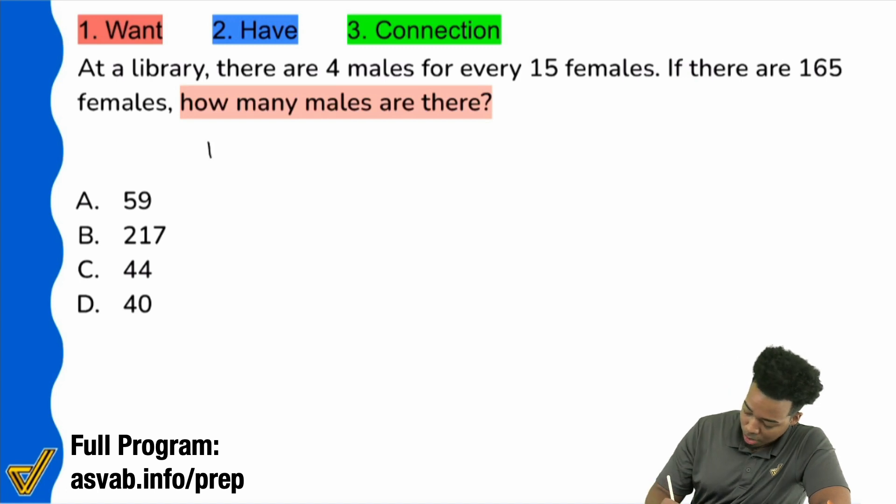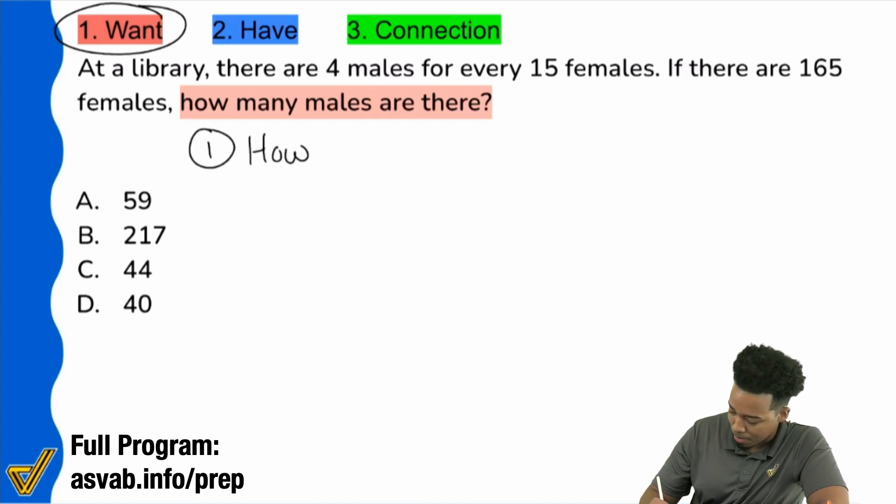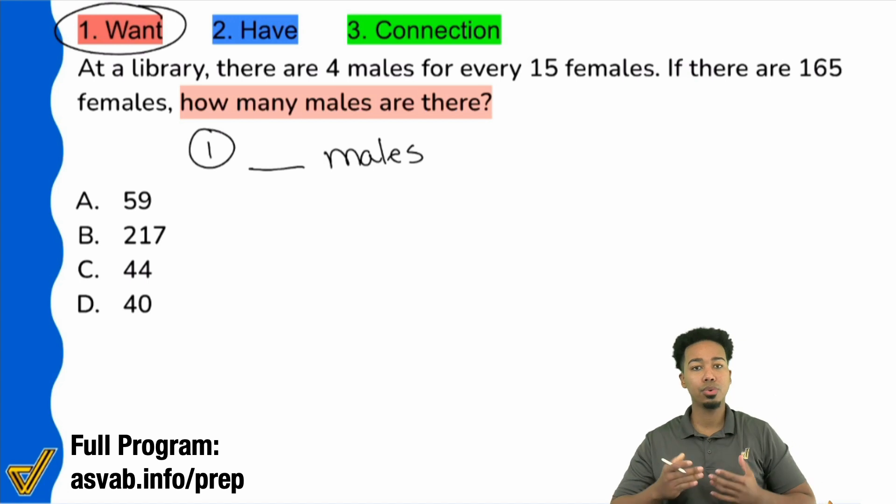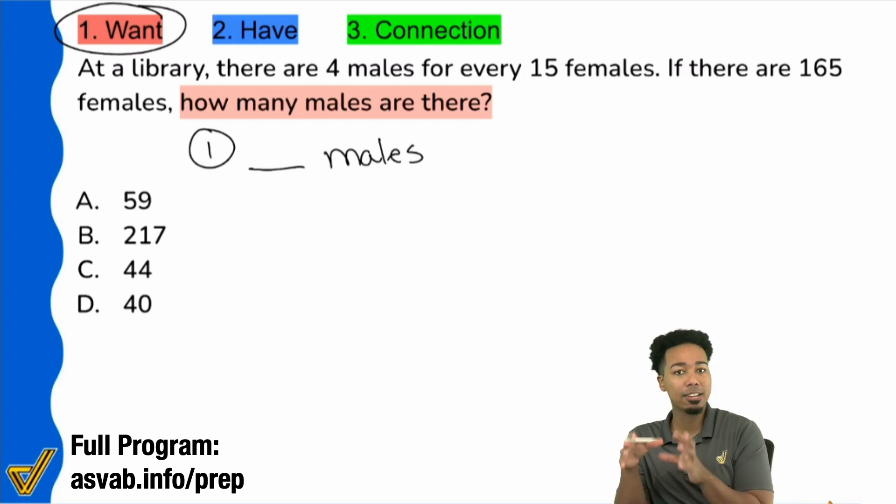Boom. So step one, what do we want is how many males. So I'll just say blank males. And here's another thing you want to do in this first step really quick. Whenever the question starts off with if or includes the word if in it, what they're doing is they're connecting that information to the goal for you. They're actually laying it out for you. They're saying that there is a direct connection between what we're giving you and what we're asking you to find.